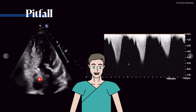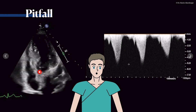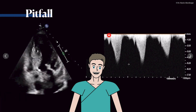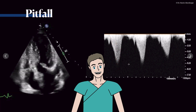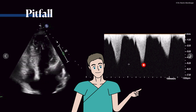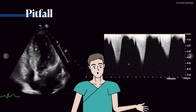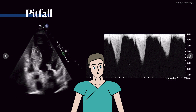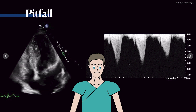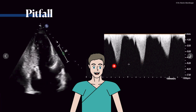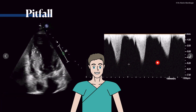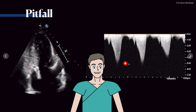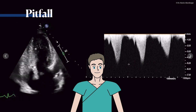Here you already see a beginning of a five-chamber view, and when you use the continuous wave Doppler, you see this dagger-shaped signal. So that's not an aortic valve signal — not aortic stenosis — but an LVOT obstruction. Very high gradient: five meters per second is the maximum velocity of the signal.